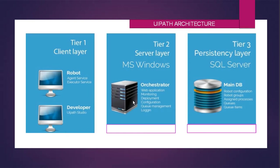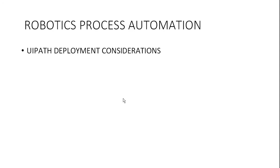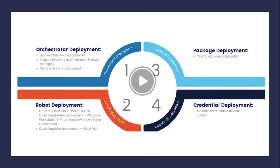Tier 3 is the server backend — mainly SQL — the main database. It contains robot configurations, robot group assignments, processes, queues, and queue items. Everything at the backend level is stored in the Tier 3 server. This covers how the UiPath components and architecture of deployment work.